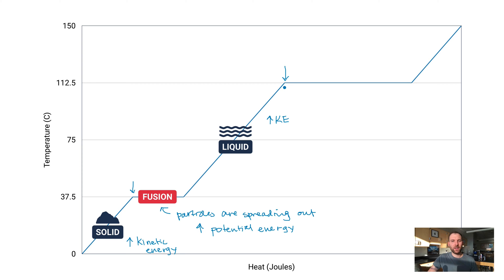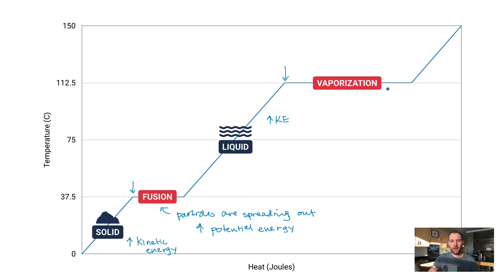We get to a point at 112.5 degrees Celsius where the temperature stops climbing again. Just like we saw with fusion, we're now boiling — in chemistry this is called vaporization. Notice this plateau is much longer than the fusion line, because it takes more heat to boil something than it does to melt it. As a solid and a liquid, the particles are still in contact with each other, just more or less ordered.